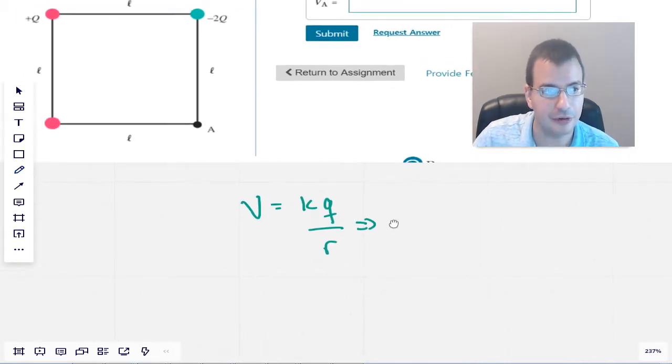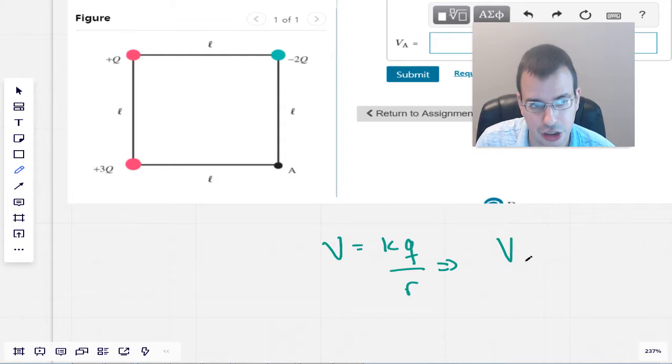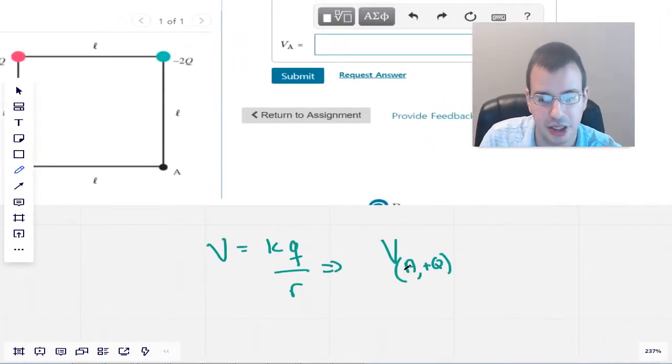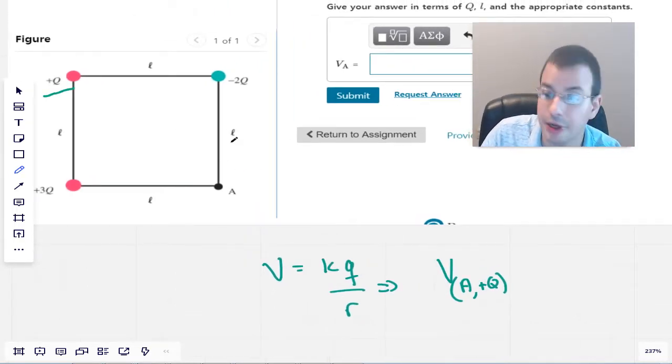Therefore, we can find voltage at point A from plus Q. So, this means, my notation here means I'm finding the voltage at point A due to the charge, this guy right up here, plus Q.